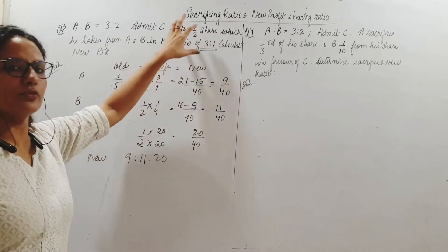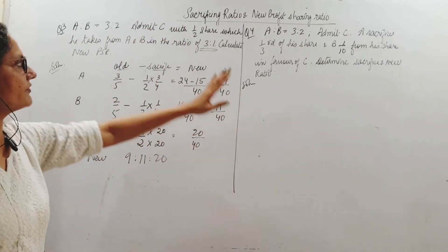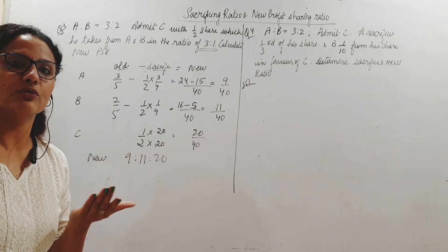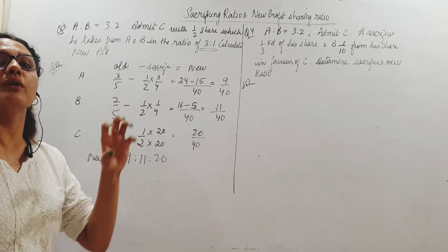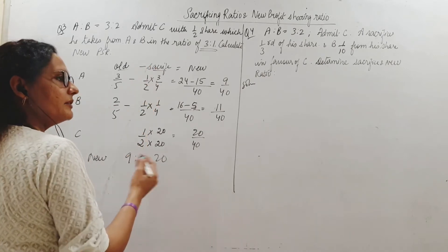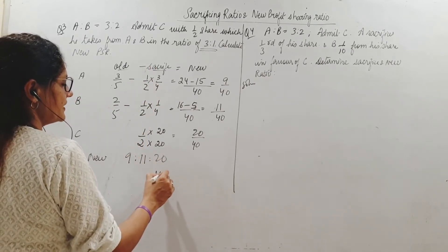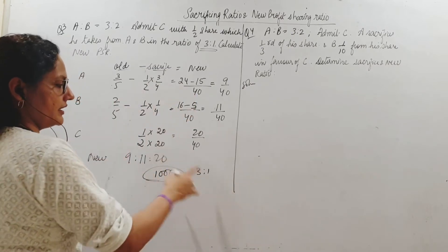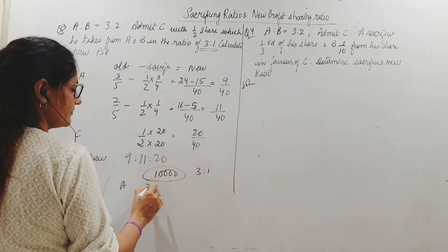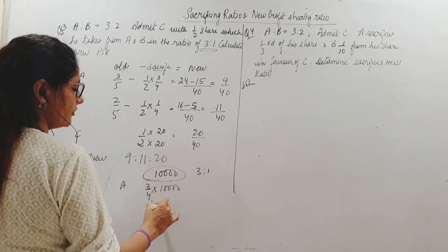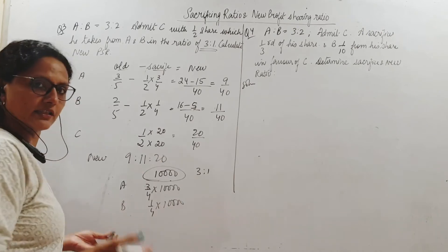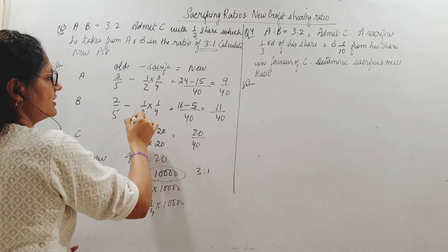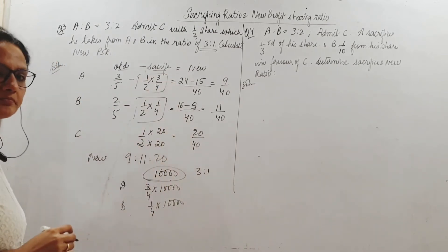So this is what you have to understand in these calculations. C is admitted with half share — both A and B are giving this half share in the ratio of 3 is to 1. Whatever is going to C, A gives 3/4 of that and B gives 1/4. Just like if A and B are giving rupees 10,000 to C in the ratio of 3 is to 1, A gives 3/4 and B gives 1/4. Here it is not 10,000 but a half share of profit going in this ratio — that is their sacrifice.